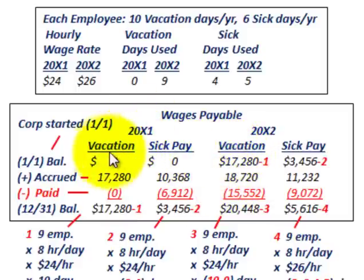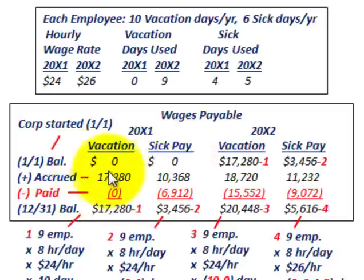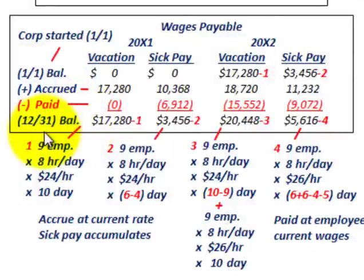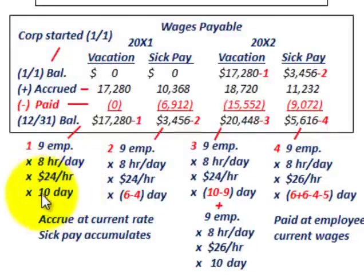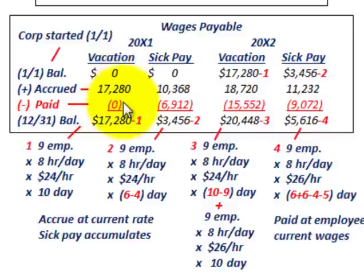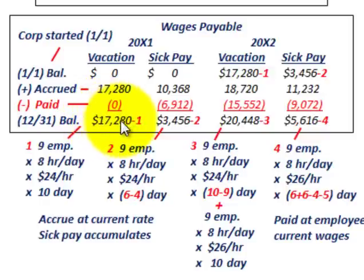For the first year vacation pay, since the corporation started on January 1st, there is no beginning balance. The accrued amount for 20X1: 9 employees at 8 hours per day at $24 per hour for 10 vacation days gives $17,280. With zero vacation days used and nothing paid out, the ending balance is $17,280.